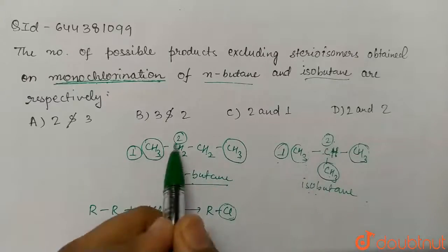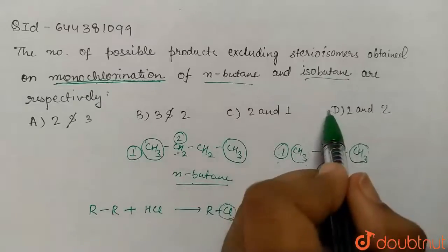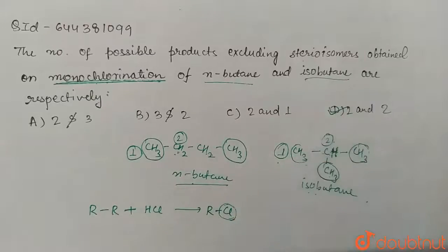So the number of monochlorinated products formed from isobutane will be two, and from N-butane also two. So our answer will be D. I hope you understood the question. Do practice this question. Thank you.